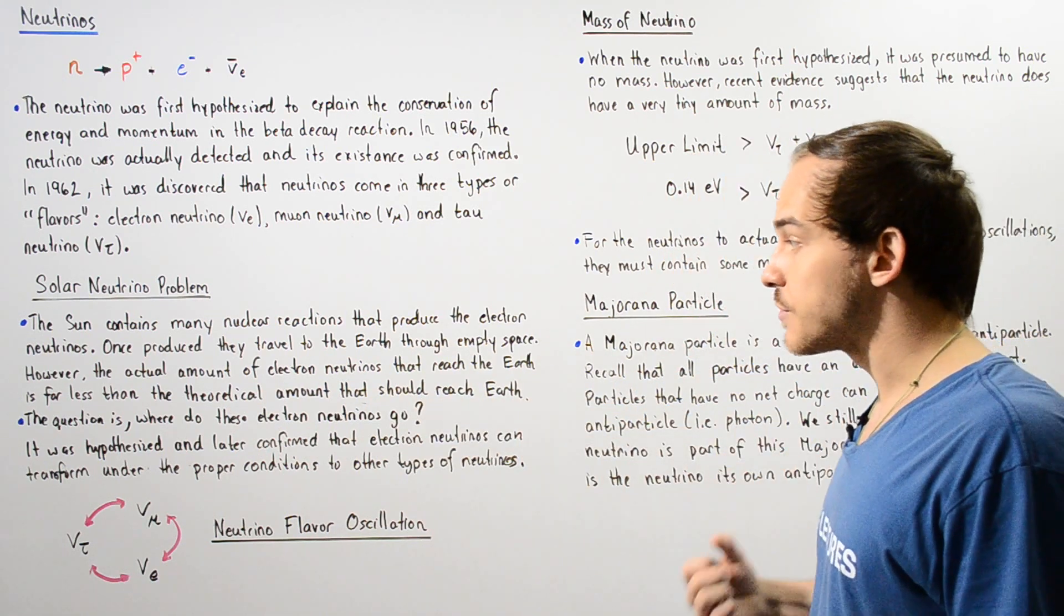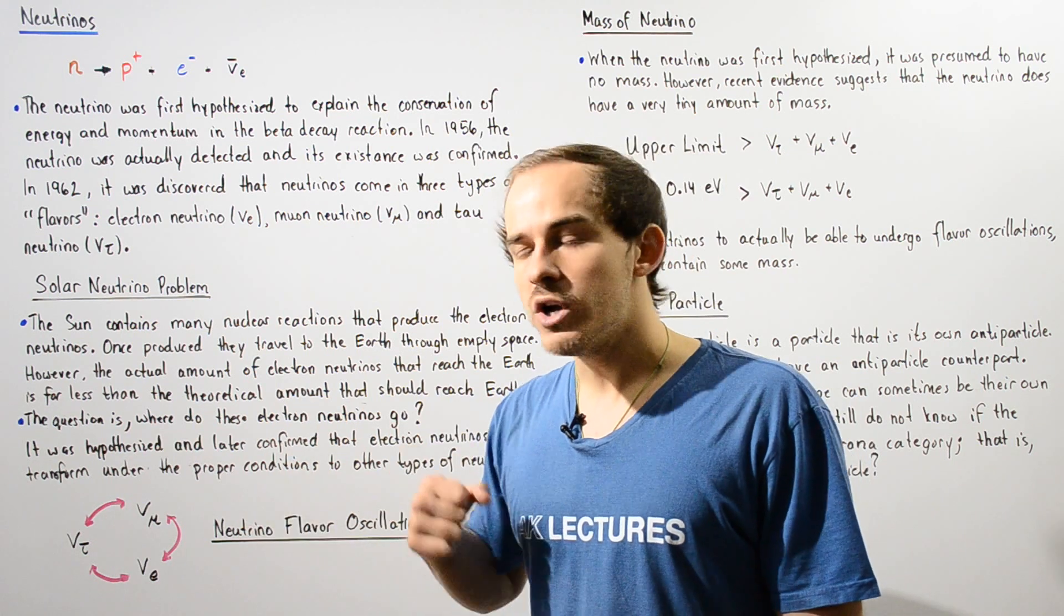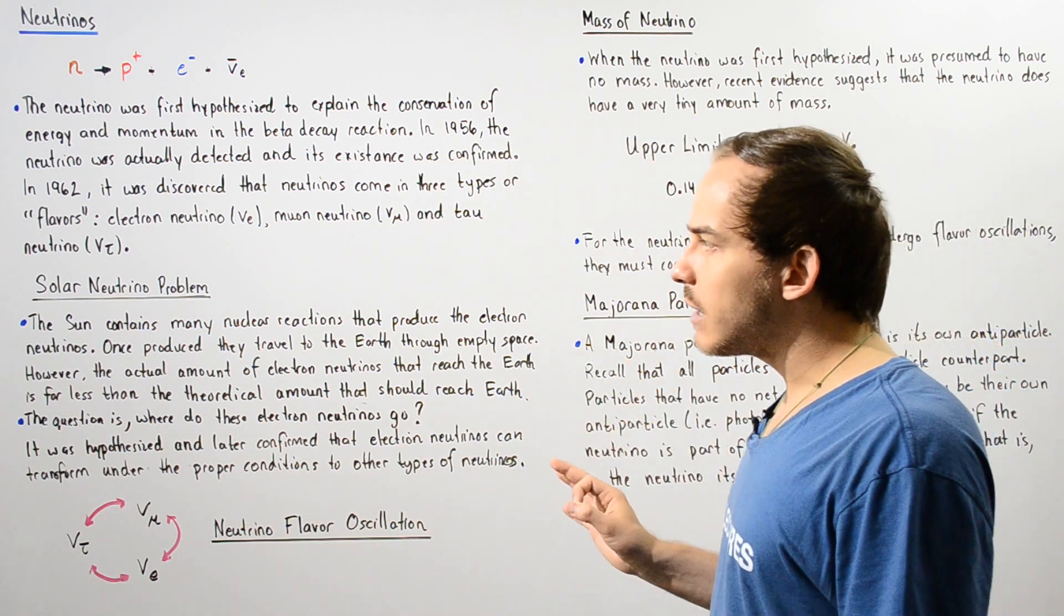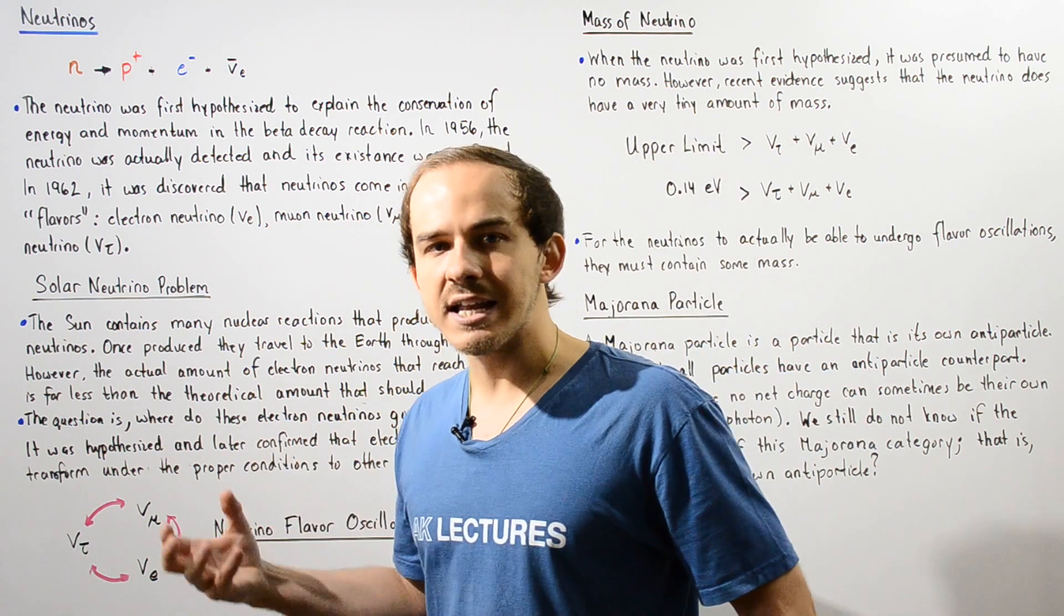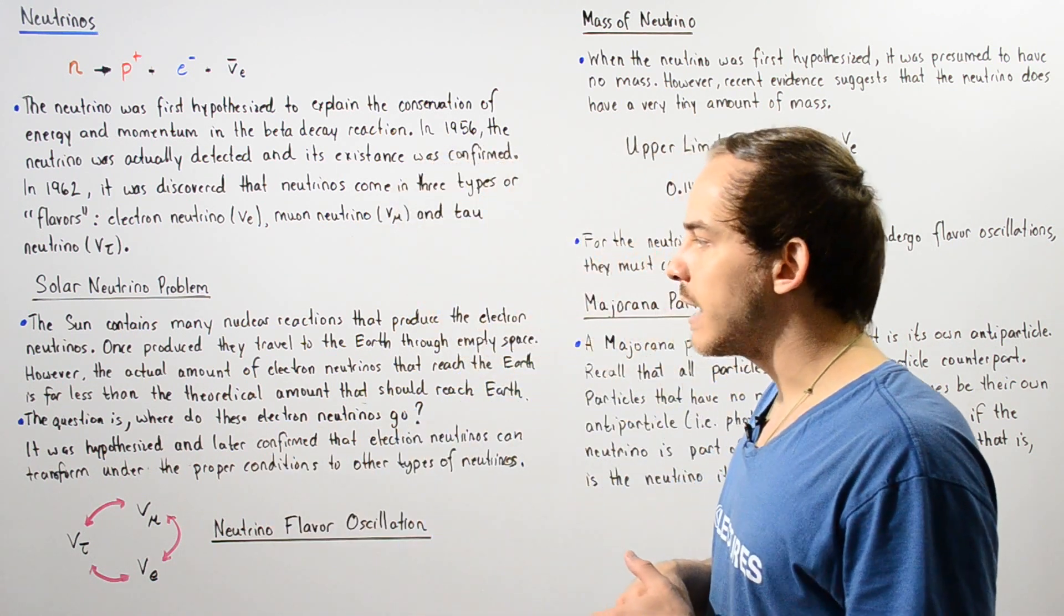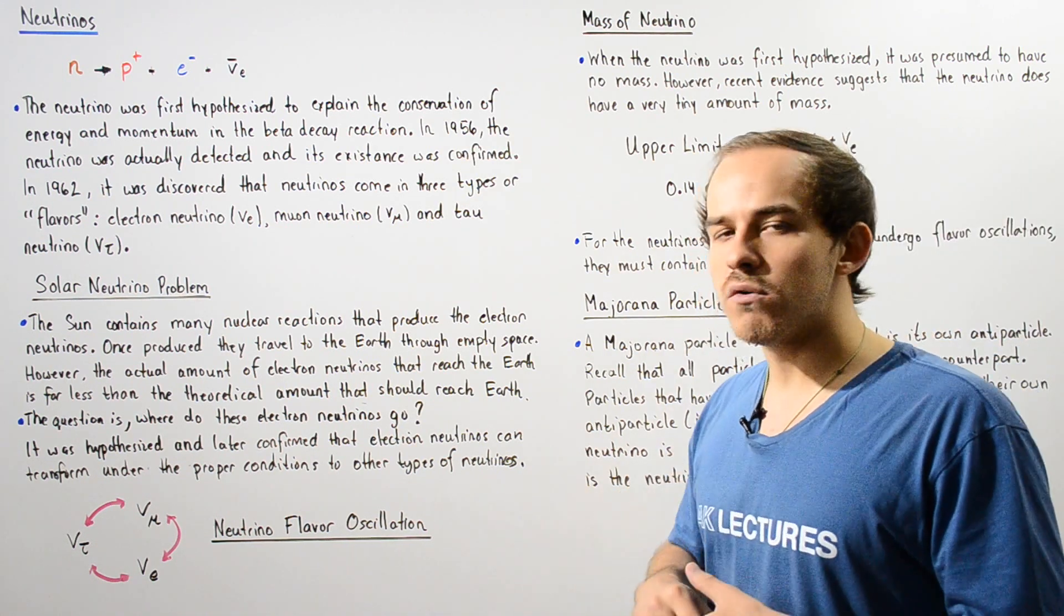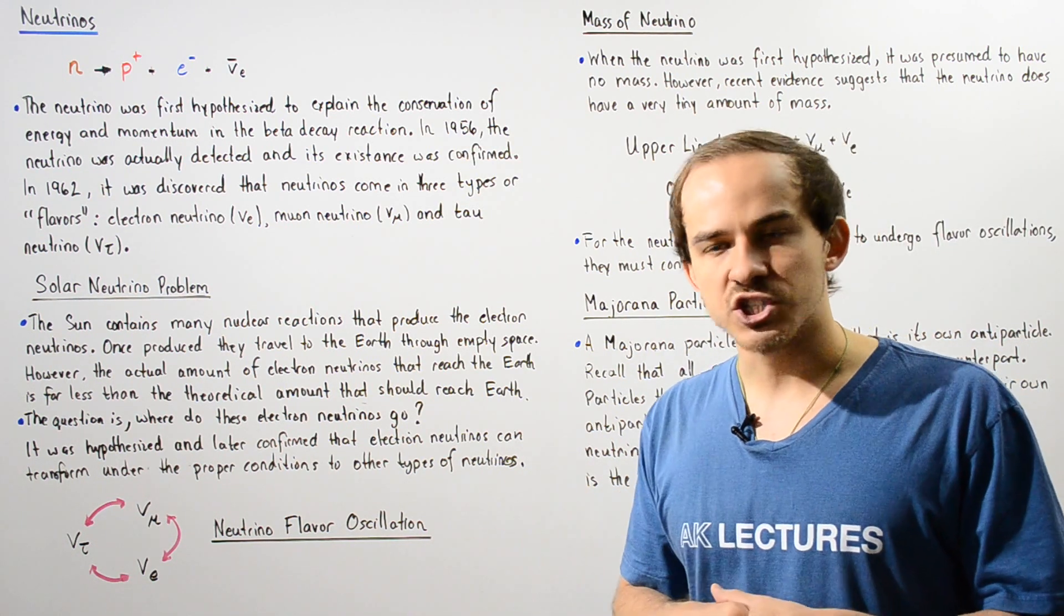And the question is, where exactly do these electron neutrinos go? So this problem was a problem that was not answered for a very long time. And eventually, it was resolved with the neutrino flavor oscillation.